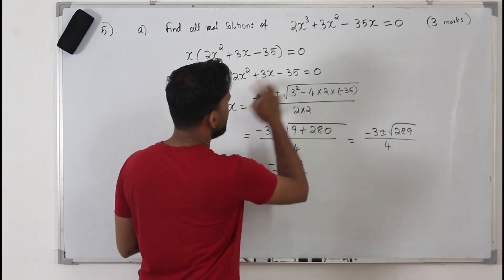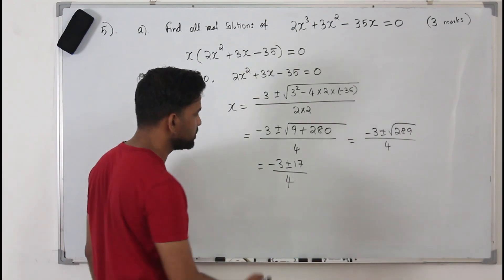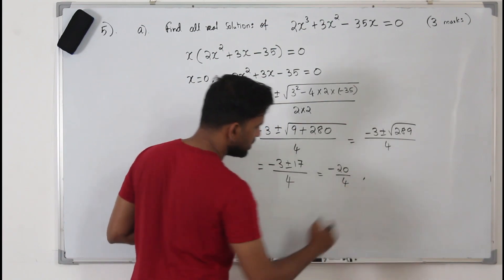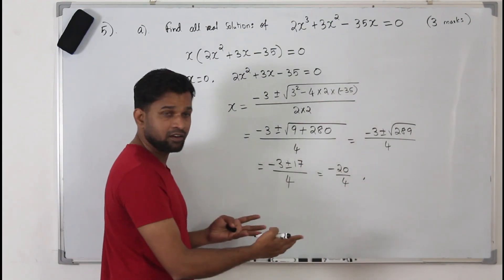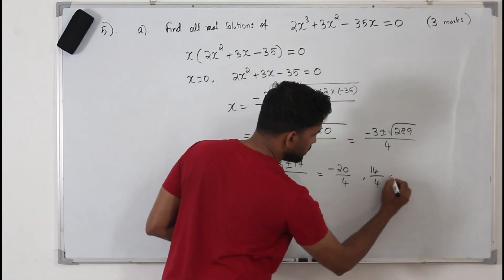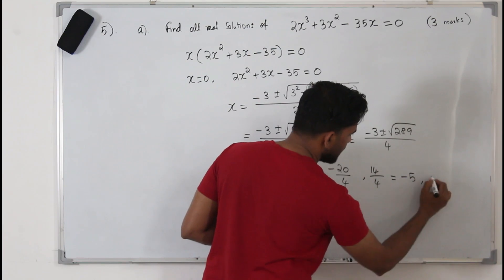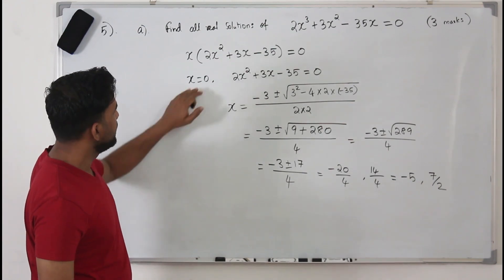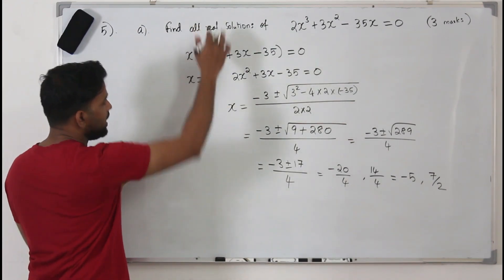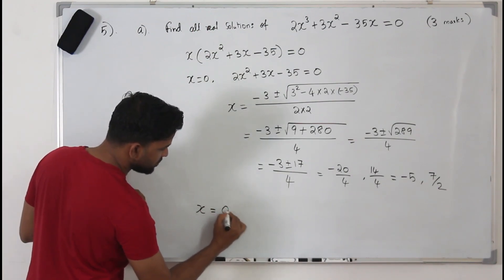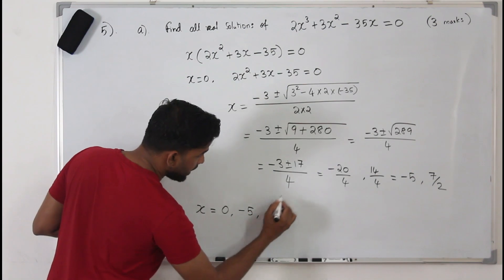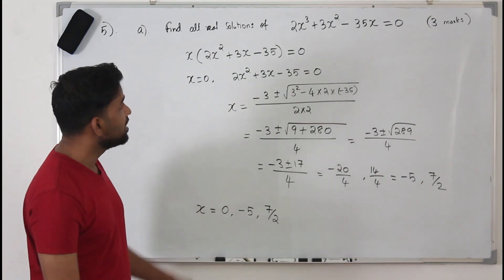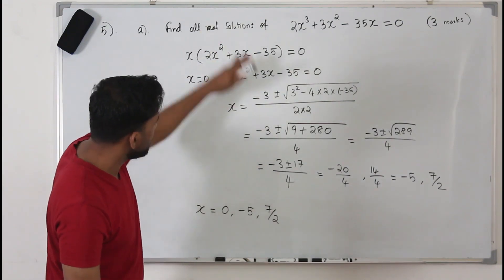Using the calculator, the two values are: (-3 - 17)/4 = -20/4 = -5, and (-3 + 17)/4 = 14/4 = 7/2. Combined with x = 0 from earlier, all three real solutions are: x = 0, x = -5, and x = 7/2 (or 3.5). Solving this correctly gets you 3 marks.